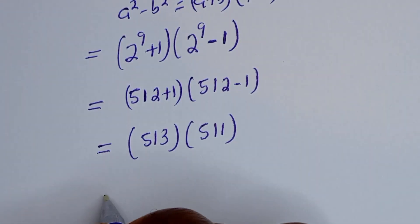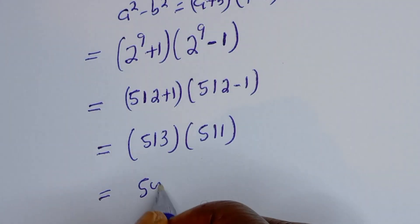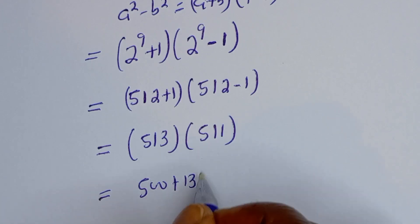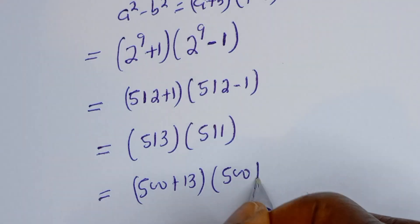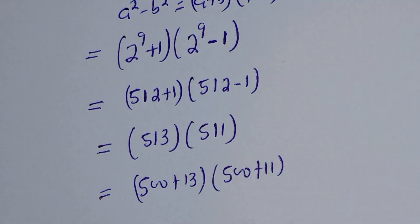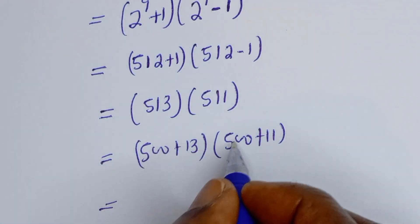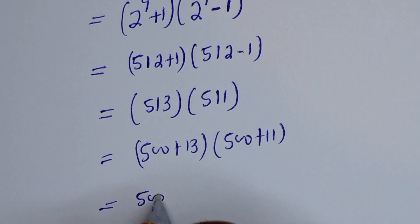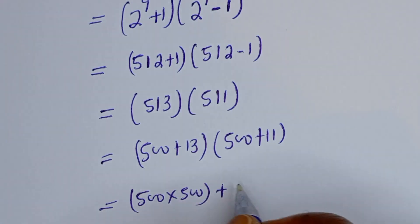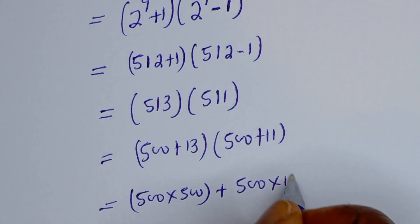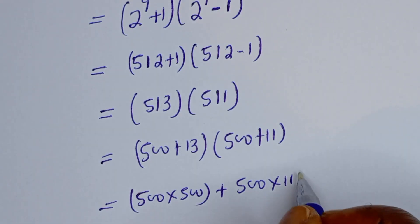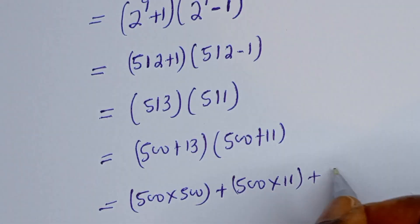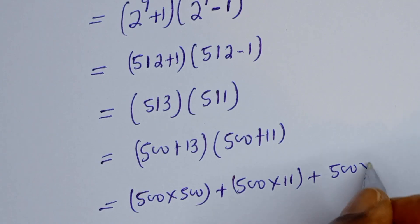And 513 can be written as 500 plus 13, bracket 511 can be written as 500 plus 11. Now let's multiply out. This gives 500 times 500, plus 500 times 11, plus 500 times 13.